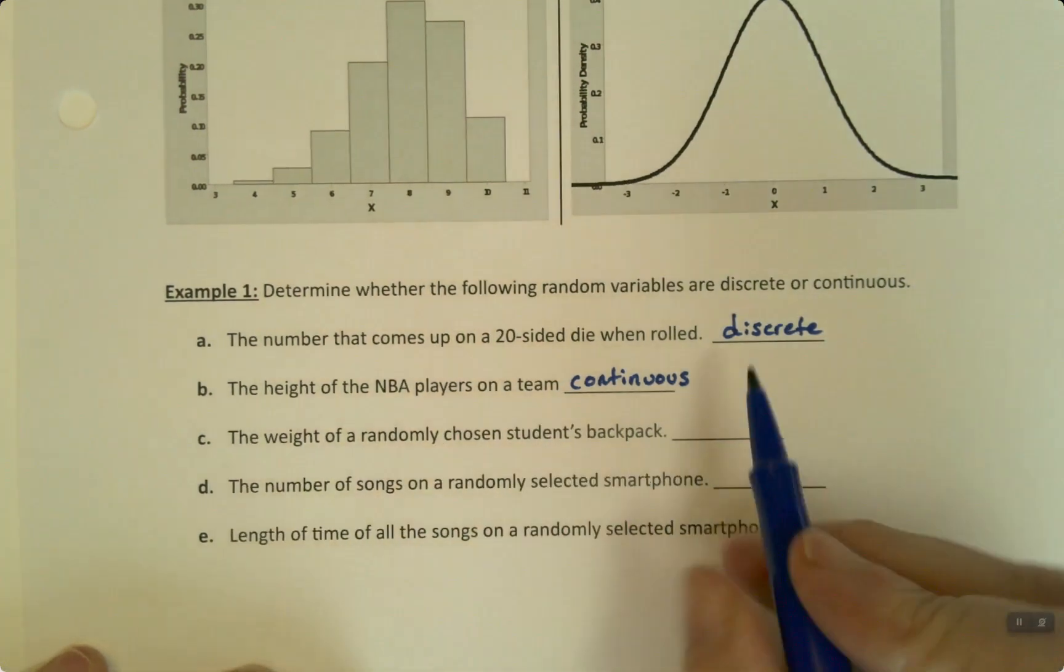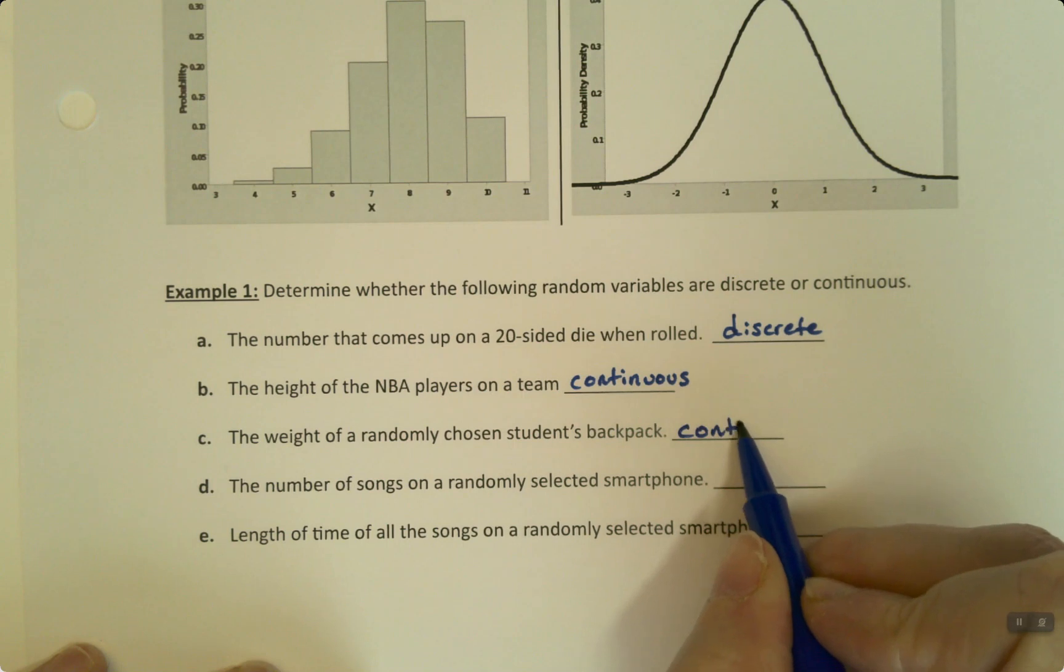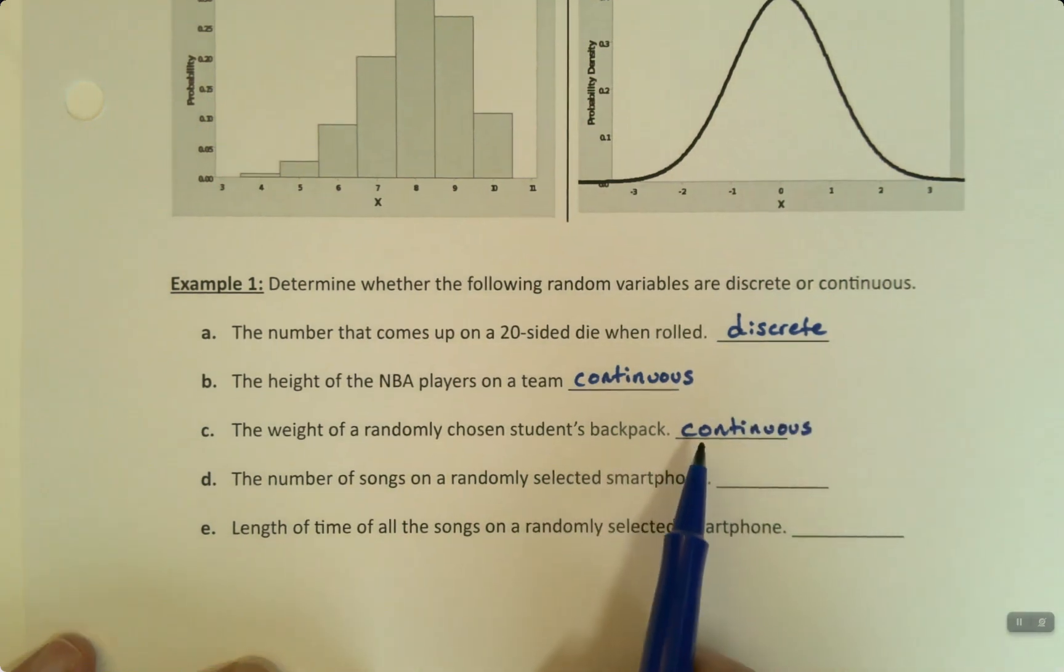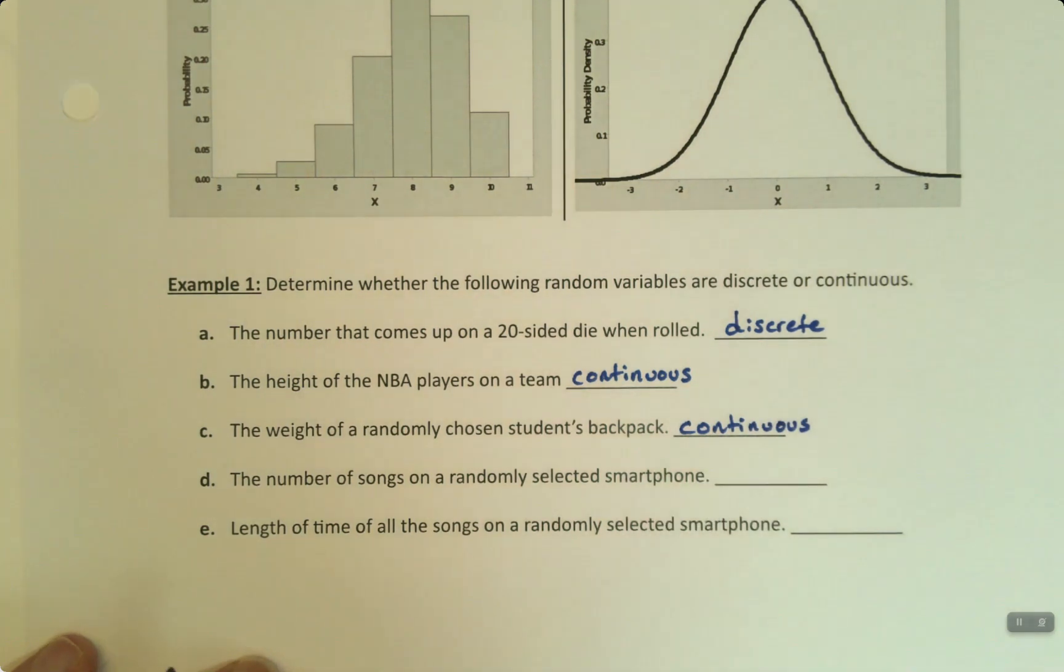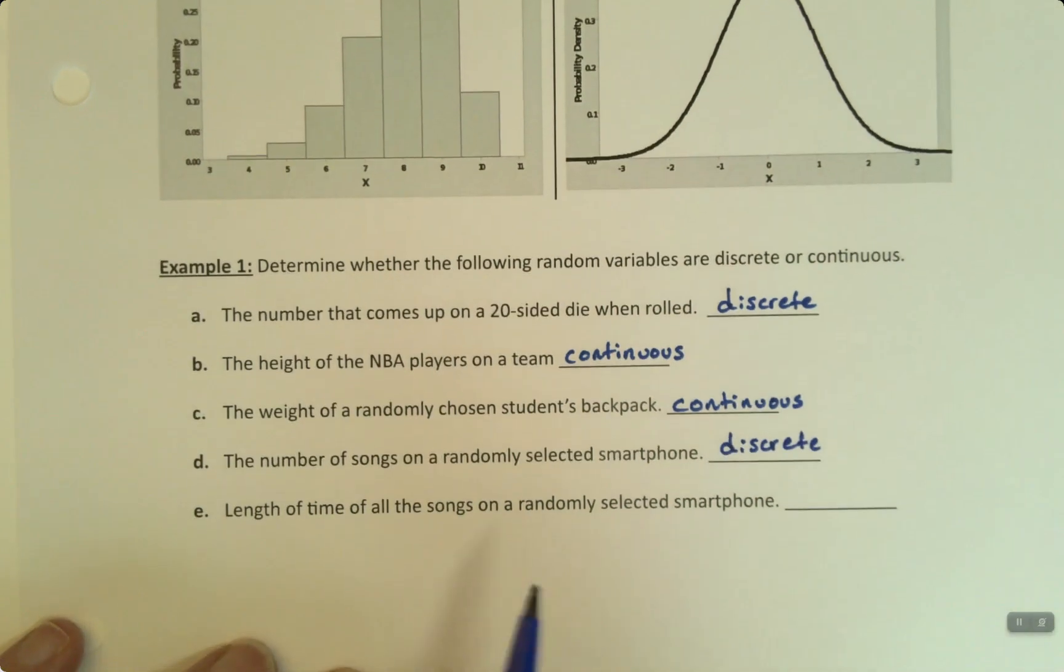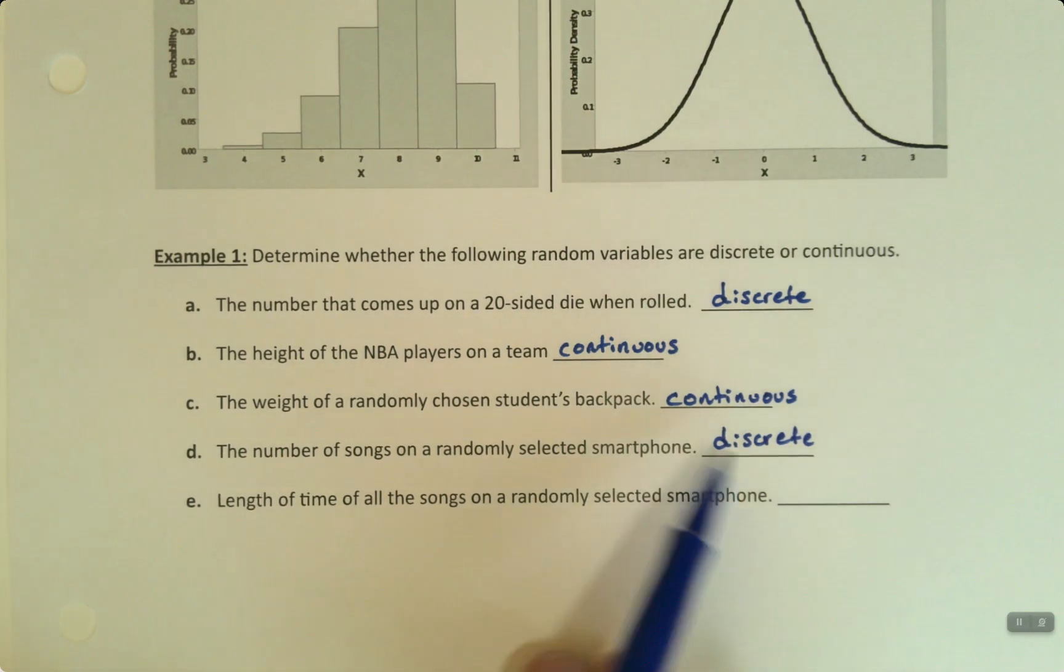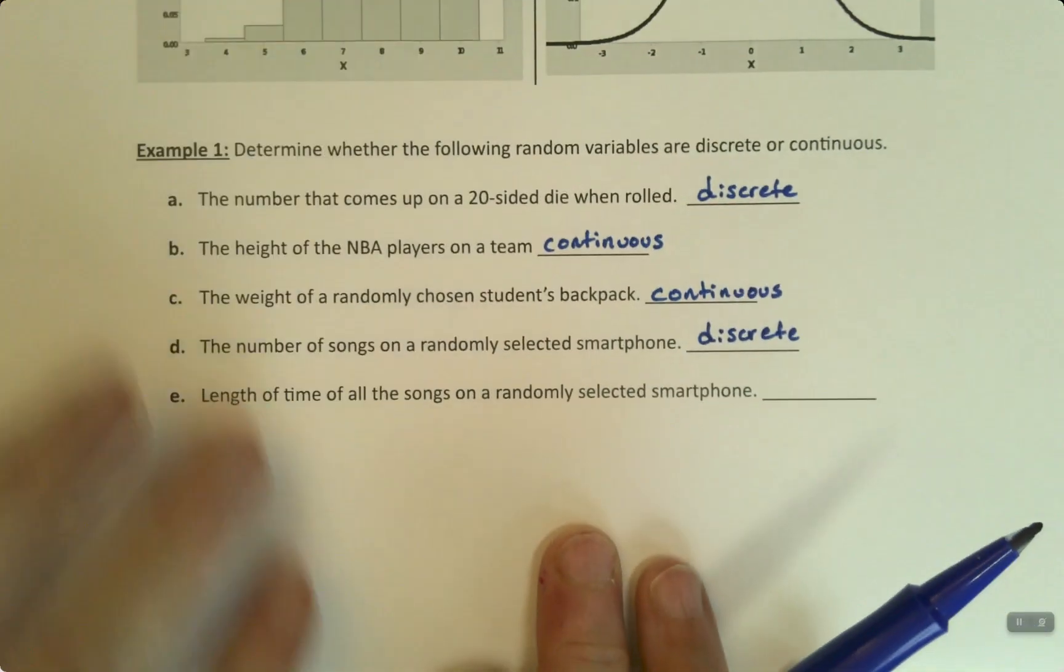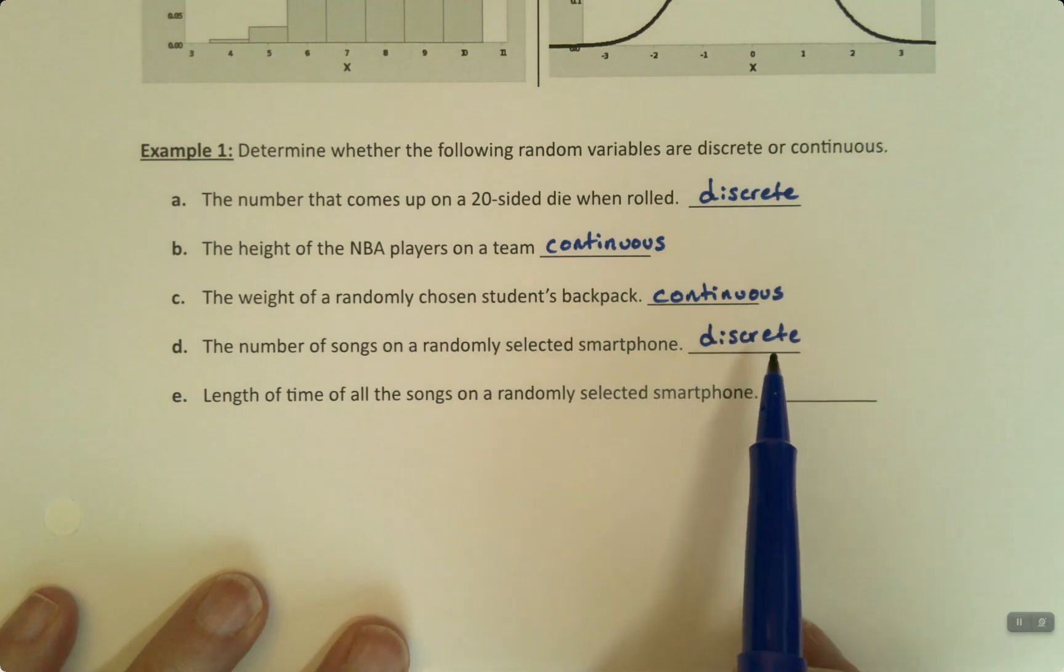Similarly, the weight of a randomly chosen backpack is continuous. Not because it's growing or shrinking, but because I can get more decimal places if I just have a better scale. So, the number of songs on my smartphone is discrete. Or in my Spotify playlist, it's discrete. It doesn't have to be finite, but it is discrete. You can count the number of songs.